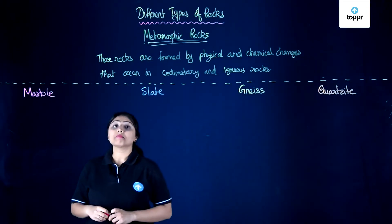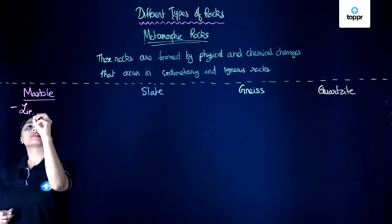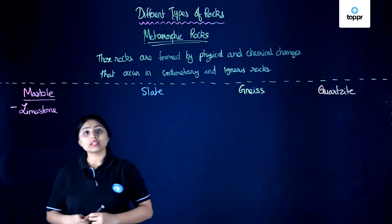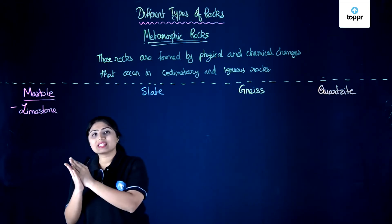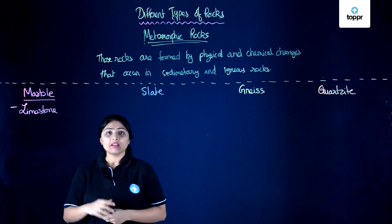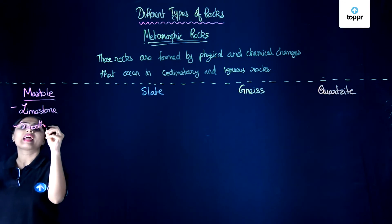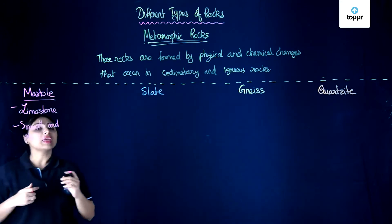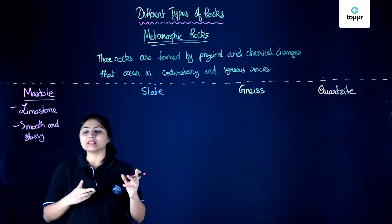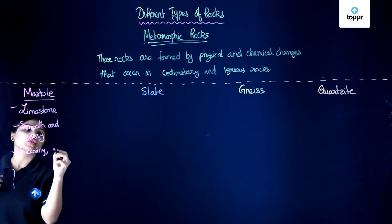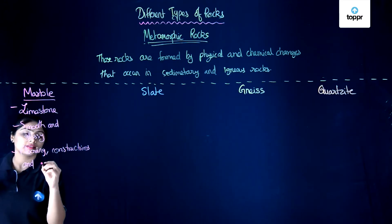The first type of metamorphic rock is marble. Marble is formed when certain changes occur in a sedimentary rock called limestone. Limestone is a sedimentary rock formed by the deposition of animal skeletons and shells. When there are changes in limestone, marble is formed. Marble is a smooth, glassy, lustrous substance. It is used in floorings, wall construction — such as kitchen walls — and even in ornaments because of its shine.